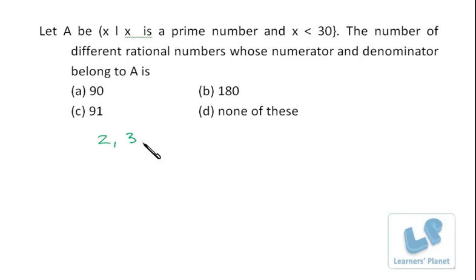So it's 2, 3, 5, 7, 11, 13, 17, 19, 23, 29, right?